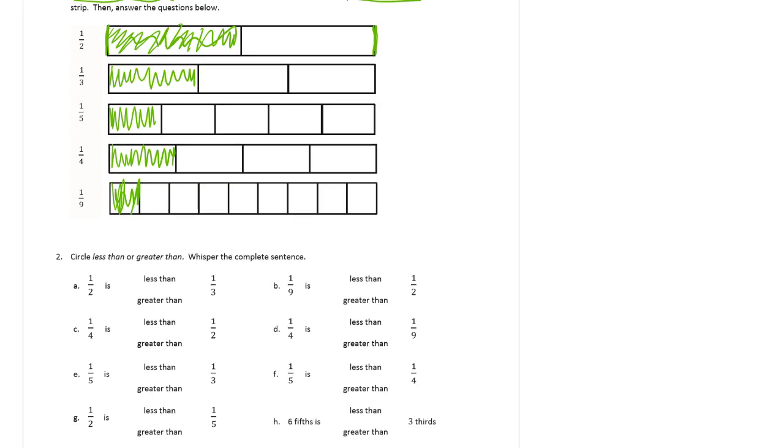It says circle less than or greater than and whisper the complete sentence. Very important to actually say this out loud. It may sound silly to somebody else, but it really matters to have some practice saying this out loud. So don't skip doing that. I know it's hard to get third graders to actually say things out loud, but if you're doing your homework by yourself, it doesn't matter if you say it wrong. It's important to not just hear somebody else say it, but to say it yourself.